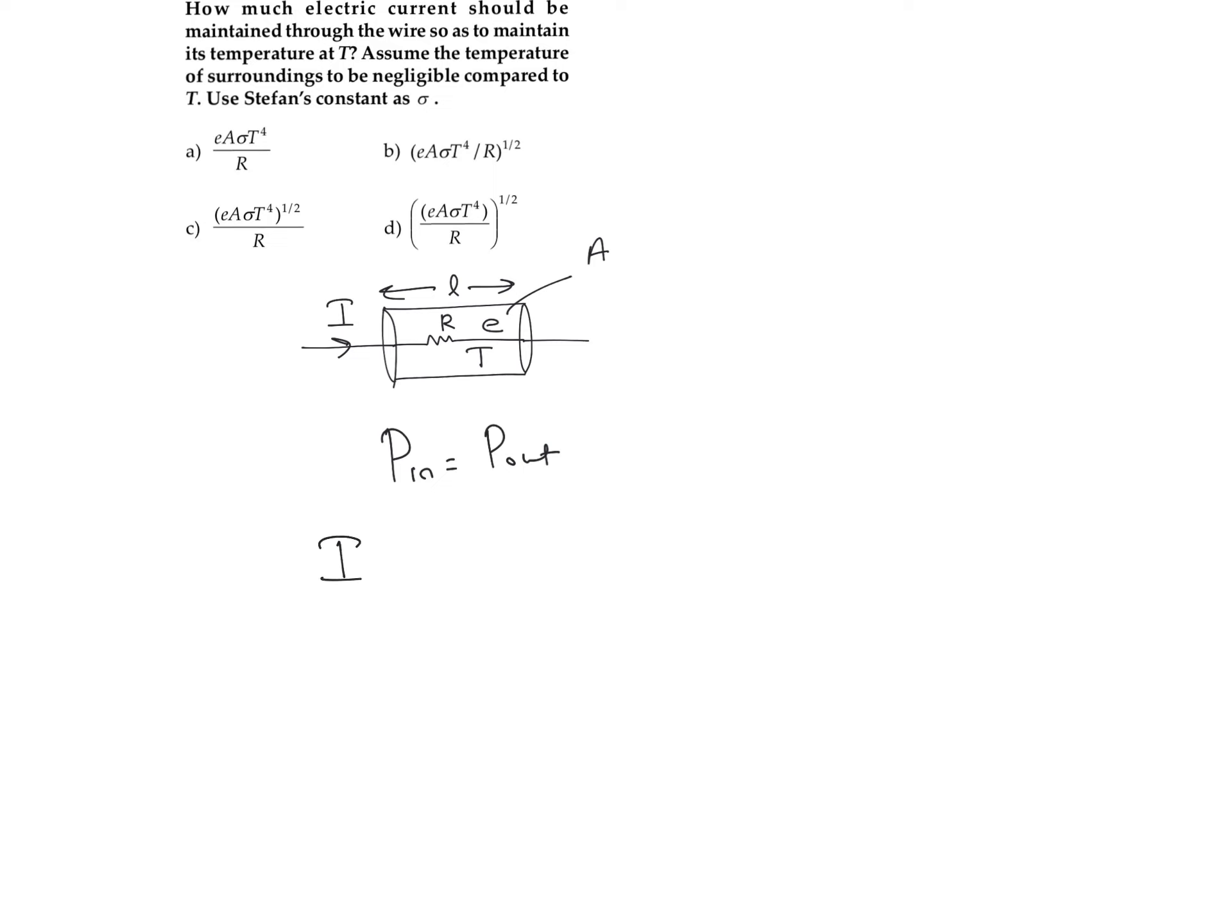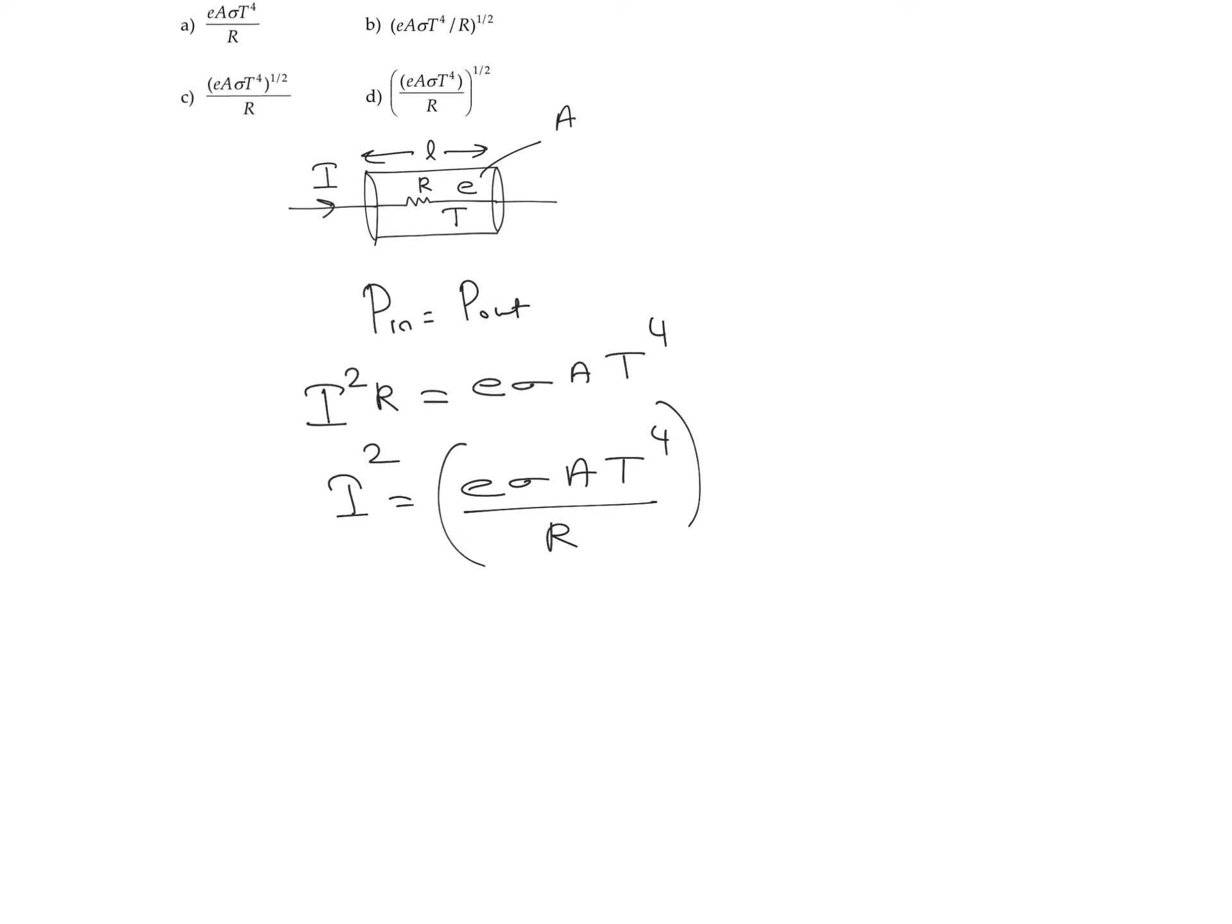We know the equation for power in current electricity, that is I squared into R should be equal to power which is coming out, which is E sigma A temperature of object raised to 4. So we can find out the value of I. This we can take as E sigma A into temperature of object raised to 4 divided by R will give the value of I squared. So the value of I can be written as E sigma A temperature of object raised to 4 divided by R, raised to 1 by 2.